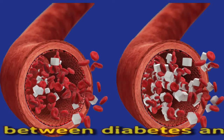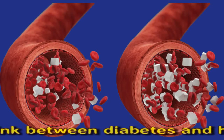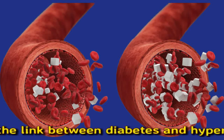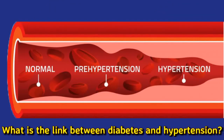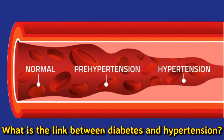Can diabetes cause hypertension? A person with diabetes either does not have enough insulin to process glucose or their insulin does not work effectively. Insulin is the hormone that enables the body to process glucose from food and use it as energy. When a person has insulin problems, glucose cannot enter their cells and instead accumulates in the bloodstream. High blood glucose levels can cause widespread damage to tissues and organs, including those that play a key role in maintaining healthy blood pressure. For example, damage to the blood vessels and kidneys can cause blood pressure to rise.